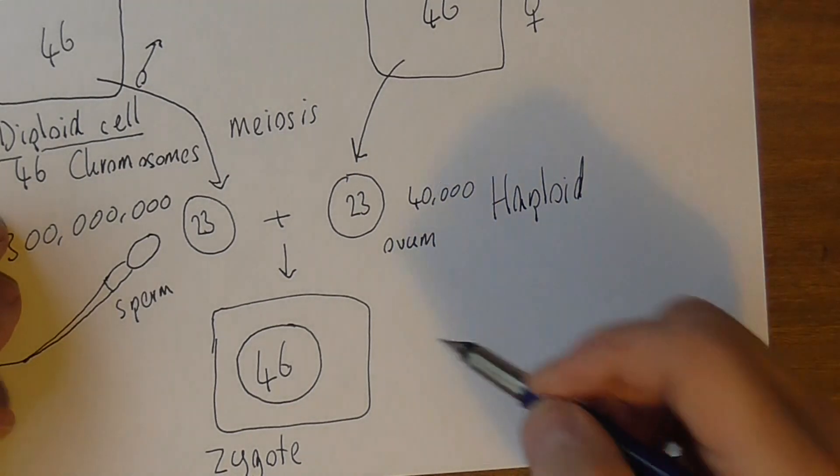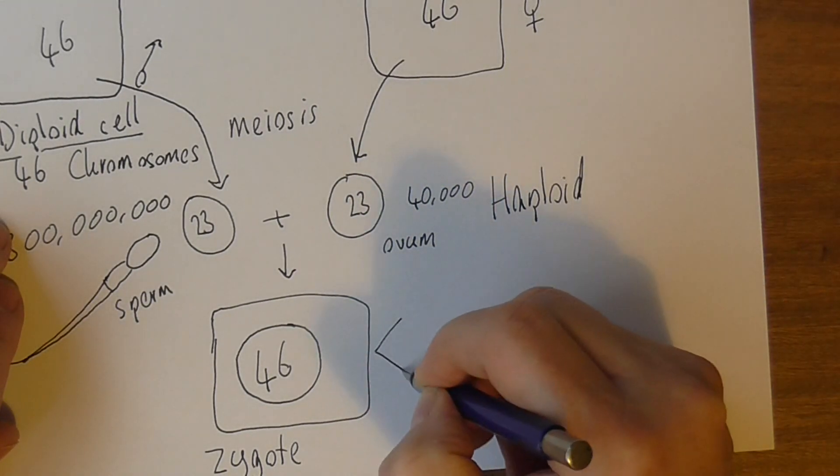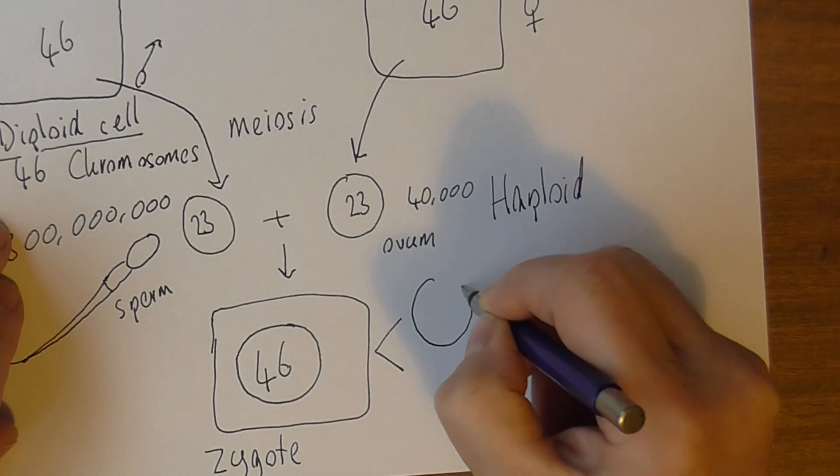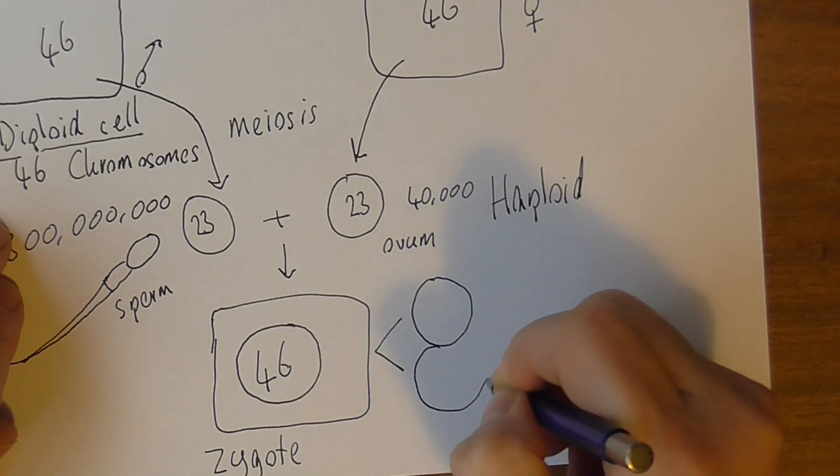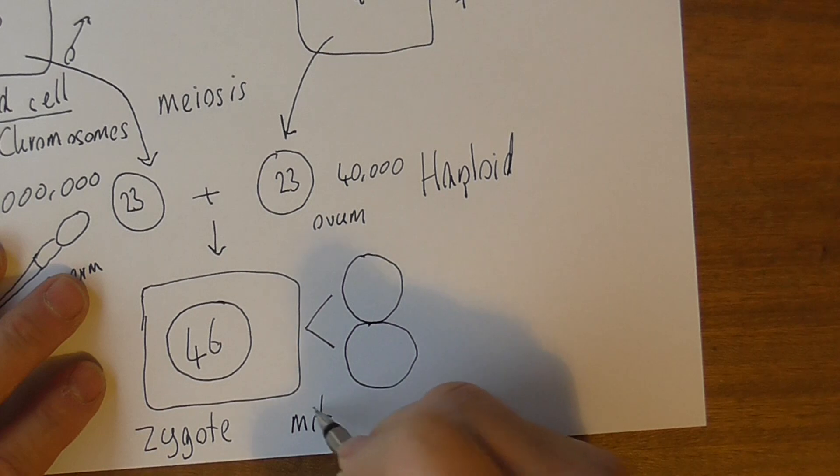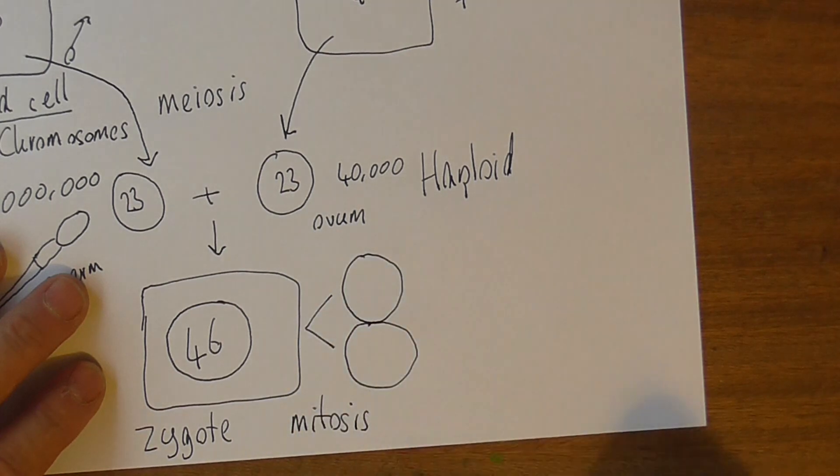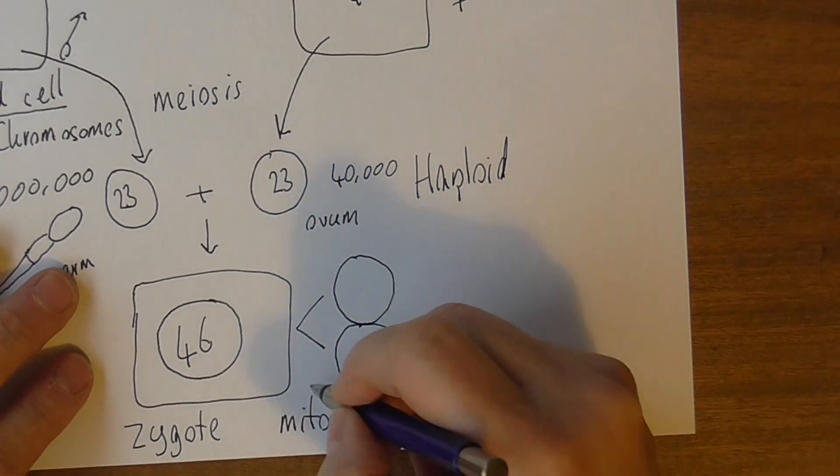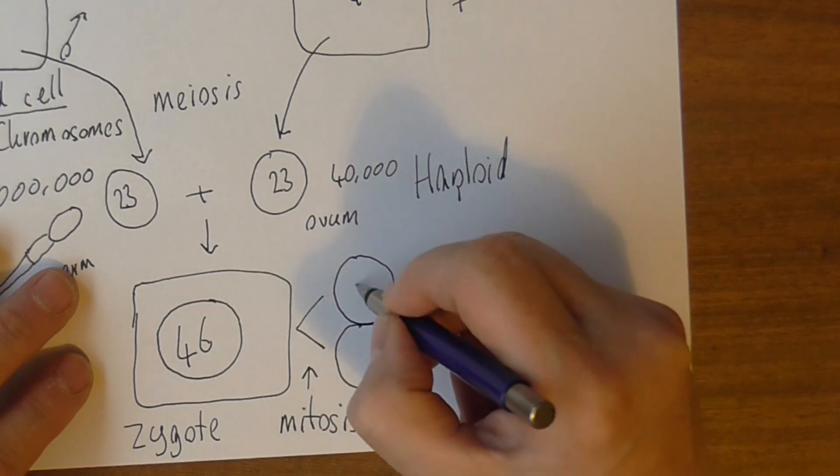But to go back to the story, the zygote of course divides into two. But this time the process is mitosis, mitotic cell divisions, each with 46.